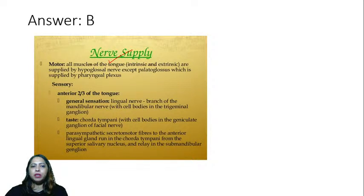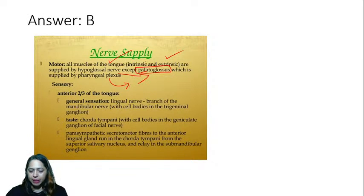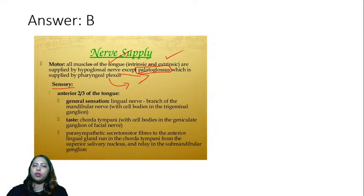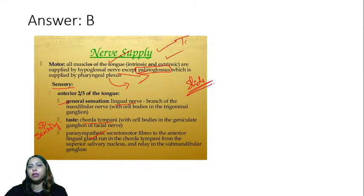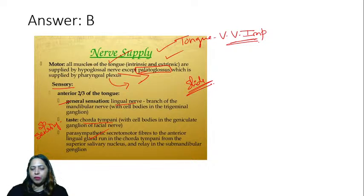All muscles of the tongue — both intrinsic and extrinsic — are supplied by the hypoglossal nerve, except palatoglossus, which is supplied by the vagus through the pharyngeal plexus. The sensory supply of the tongue is not by the hypoglossal nerve at all — it is by the lingual nerve (general sensory) and chorda tympani (special sensory / taste). Parasympathetic fibers are also present. The nerve supply of the tongue is very important from an exam standpoint.